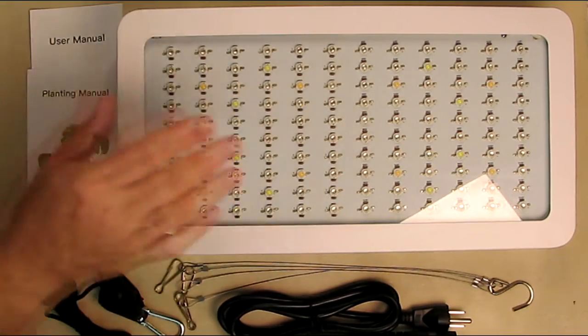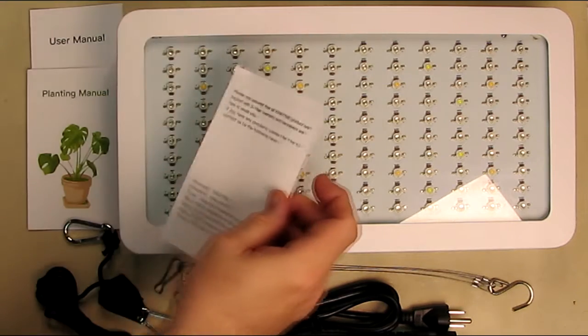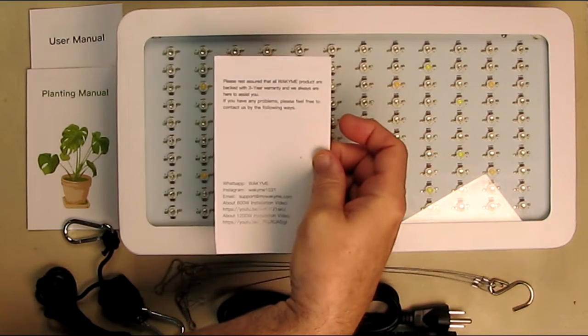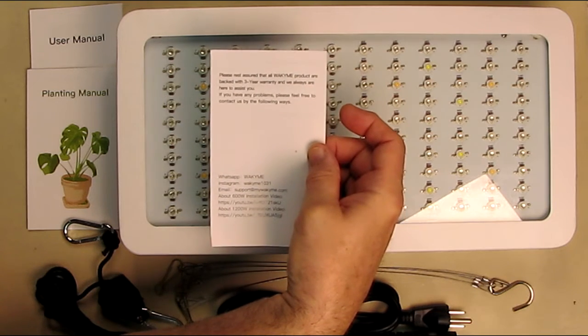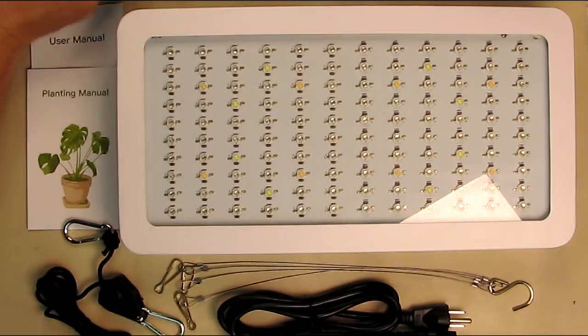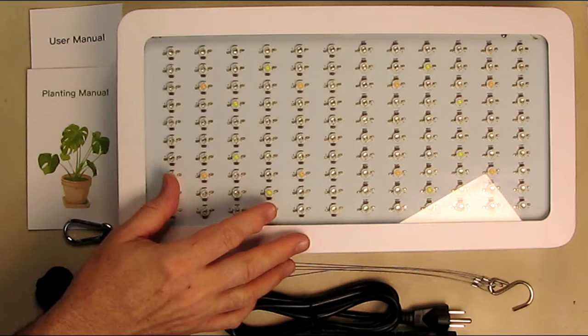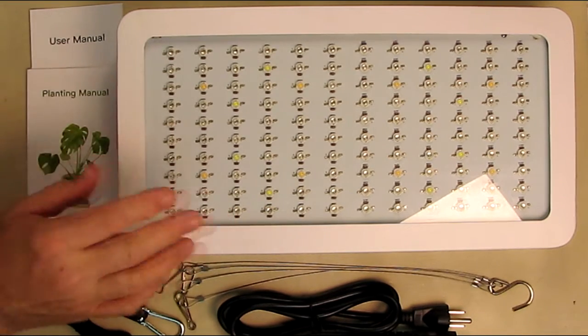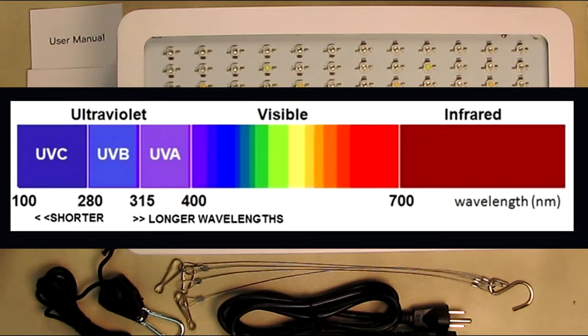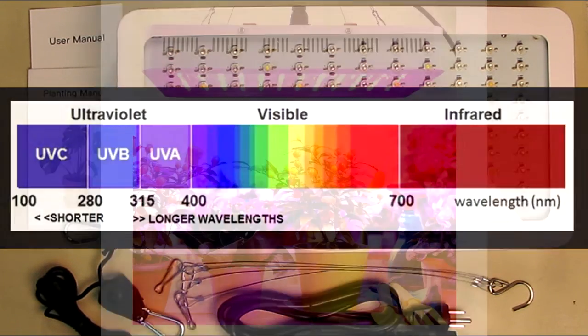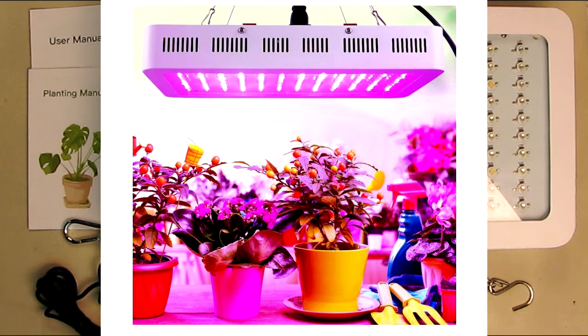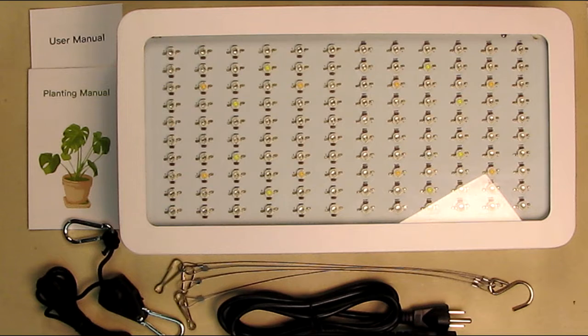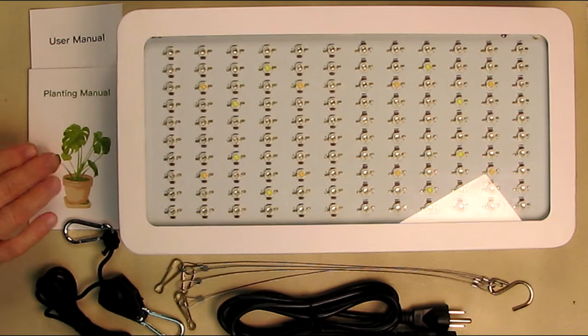Now this unit is complete with a three-year warranty from the manufacturer and they have information on how to contact them, so that's a really generous warranty for a grow light. It includes a user manual on how to operate it and a planting manual which is really nice, which points out how to use this for different types of plants, flowers, and things like basil and vegetables.